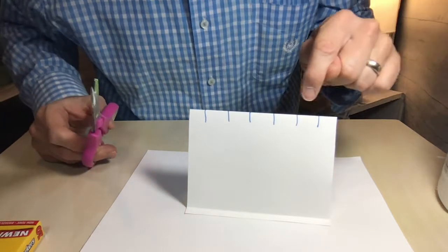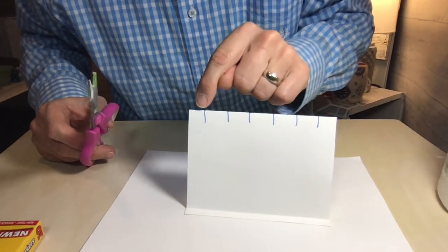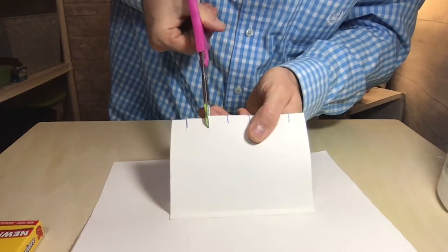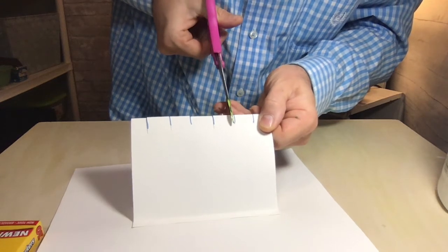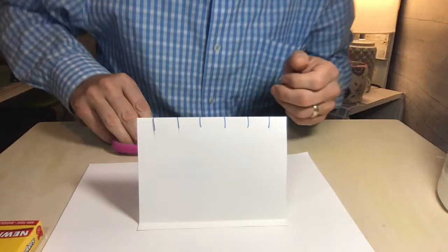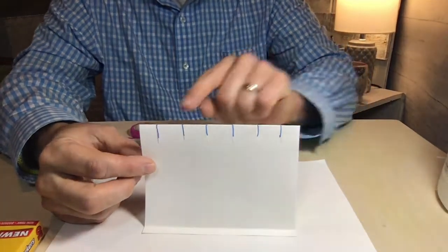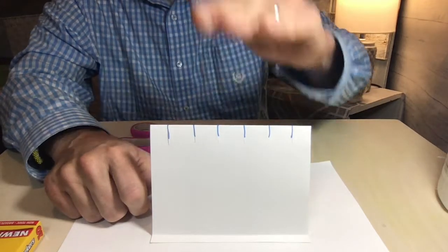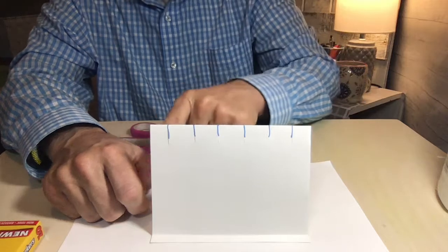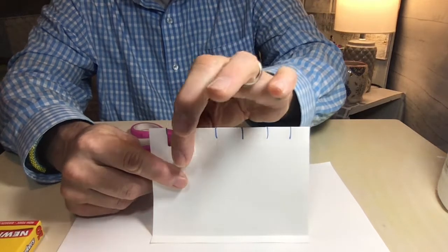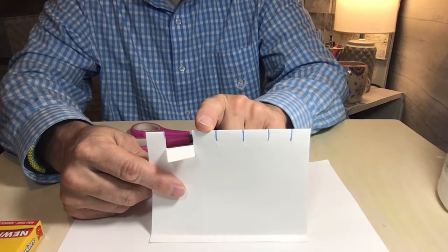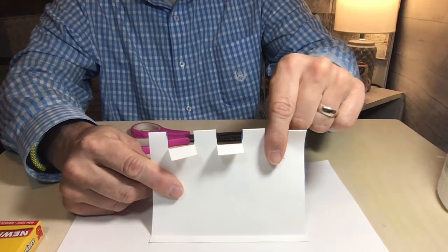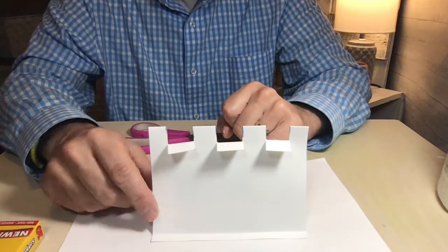Now what I'm going to do is using my scissors I'm going to cut those lines. I drew one, two, three, four, five, six lines on mine, so I'm going to cut those lines like this: one, two, three, four, five, six. And now what I'm going to do is create a pattern. A pattern is a series of items that keep repeating. So watch this: one will stand up, this one I'll flip down, this one I'll stand up, this one I'll flip down, this one I'll stand up. See how it created a pattern: up, down, up, down, up, down, up.